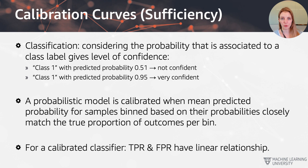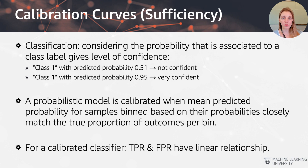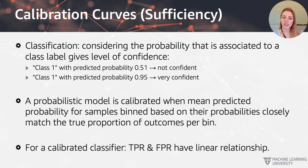On the other hand, a predicted probability of 0.95 is very close to 1 and well above the threshold, so we can say we're very confident that data point was classified correctly. A probabilistic model is calibrated when the mean predicted probability for samples binned based on their probabilities closely matches the true proportion of outcomes per bin — meaning true positive and false positive rates will have a linear relationship.